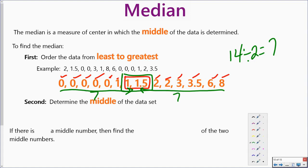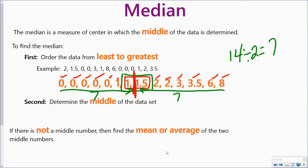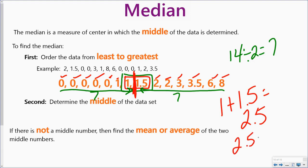Since I don't have an actual middle number — because that middle number would be right in between these two — if there is not a middle number, I have to find the mean or the average of those two middle numbers. I take 1 plus 1.5, and that gets me 2.5. Then since there are two numbers, I divide by 2. Two and a half divided by 2 is 1.25. So my median for this data set is 1.25, because it falls between 1 and 1.5.